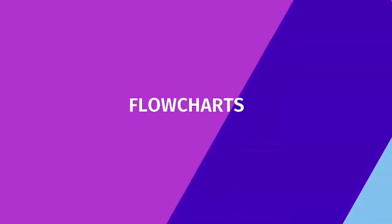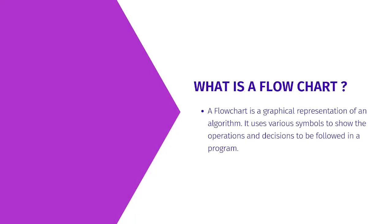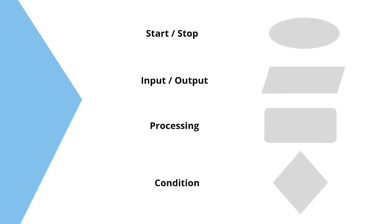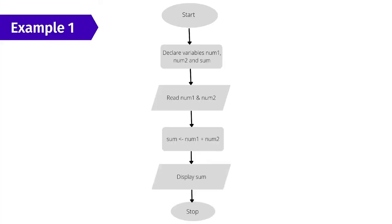Now that we've talked about algorithms, let's talk about flowcharts. What is a flowchart? A flowchart is a graphical representation of an algorithm. It uses various symbols to show the operations and decisions to be followed in a program. The common symbols used in building a flowchart are: start or stop, input/output, processing, and condition — the corresponding symbols are shown on the right side.